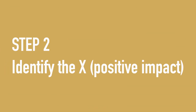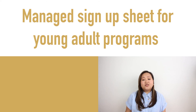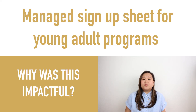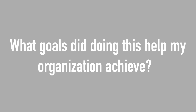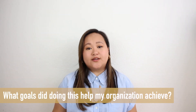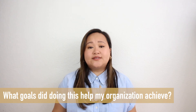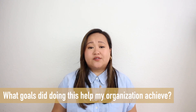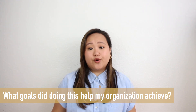Step two is to identify the positive impact of what you did — the X in our equation. Let's take a look at my second bullet point: 'Manage sign-up sheet for young adult programs.' I want to lay out why this was impactful, so I asked myself: what goals did doing this help my organization achieve? At the library, when I managed sign-up sheets, I could tell the librarians how many people had signed up so we could decide if we needed more publicity. This helped us reach our monthly goals of how many young adults participated in our programs. This is the X in our equation — my impact.